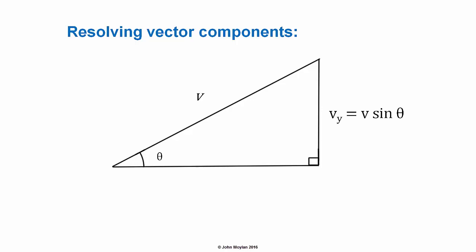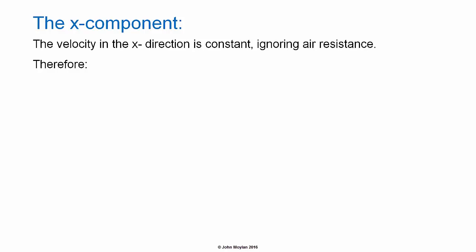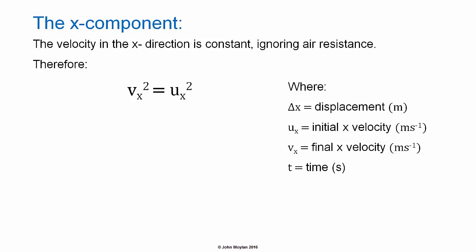The vertical component of a vector V, which is V subscript Y, is given by V sin theta. The horizontal X component is equal to V cos theta. Vectors can be combined using Pythagoras and trigonometry, such that the magnitude of a resultant vector is calculated using V squared equals V subscript X squared plus V subscript Y squared. And theta equals V subscript Y over V subscript X. The velocity in the X direction is constant, ignoring air resistance.